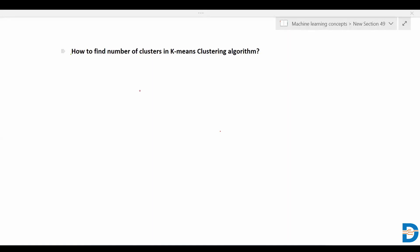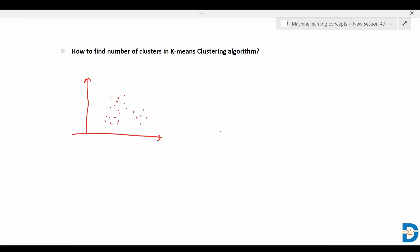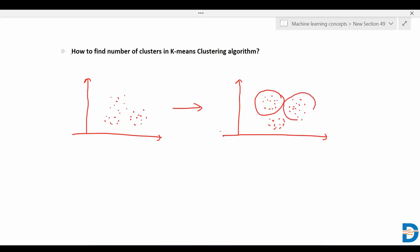Hello everyone. Today we'll find the answer to the question: how to find the number of clusters in K-means clustering algorithm. We know that if we have some data points, K-means clustering will divide or cluster the data points into multiple clusters. For example, these data points are divided into three clusters: cluster number one, cluster number two, and cluster number three.